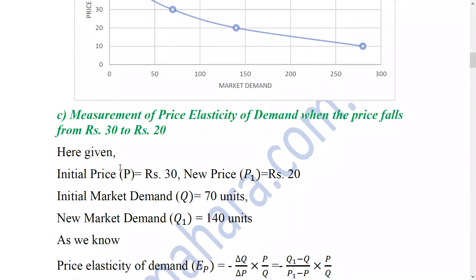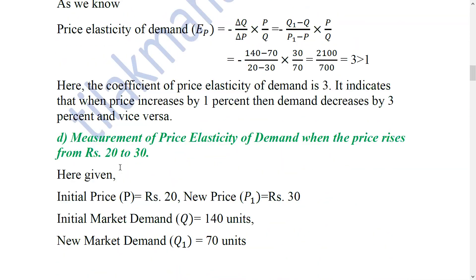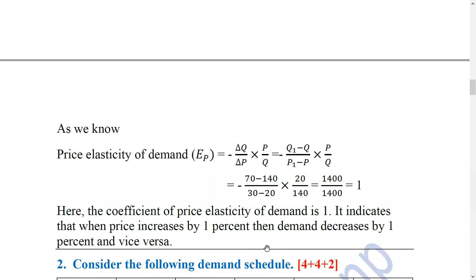Now the price increases from 20 to 30. The initial price is 20, new price is 30. Initial quantity is 140 and new quantity is 70 units. Applying the formula: (70 minus 140) divided by (30 minus 20), into 20 by 140. The answer is 1.